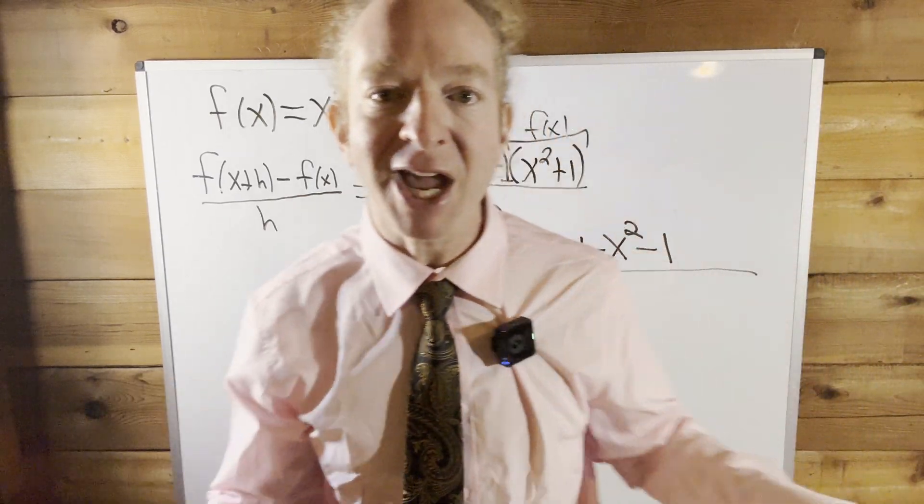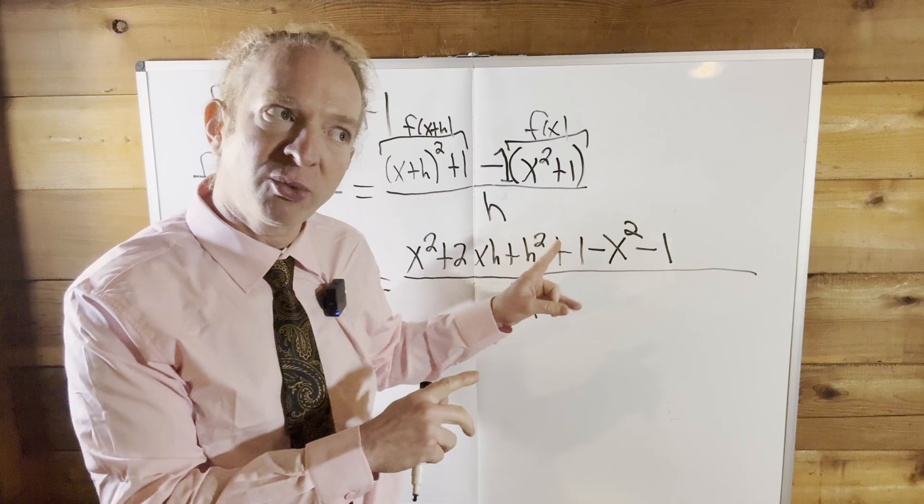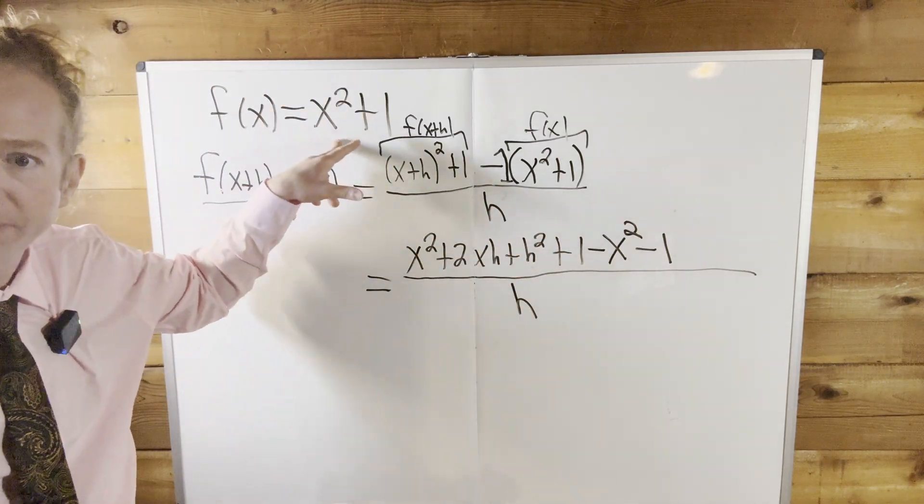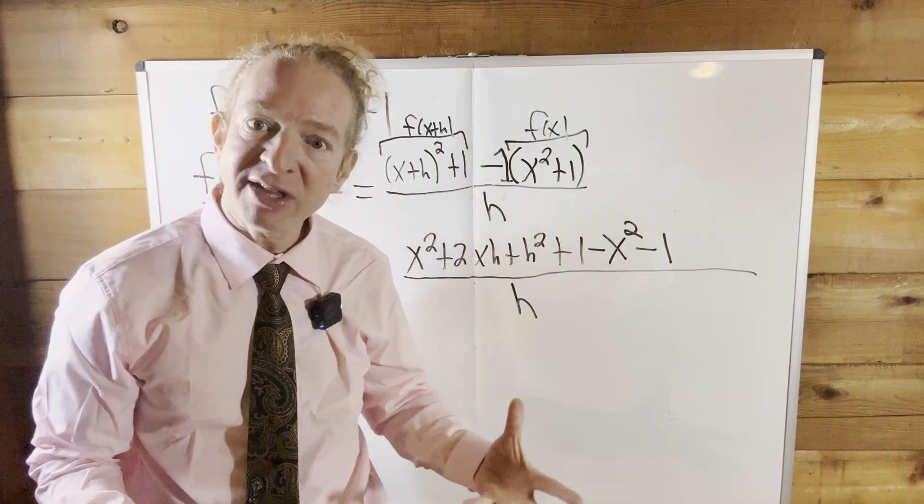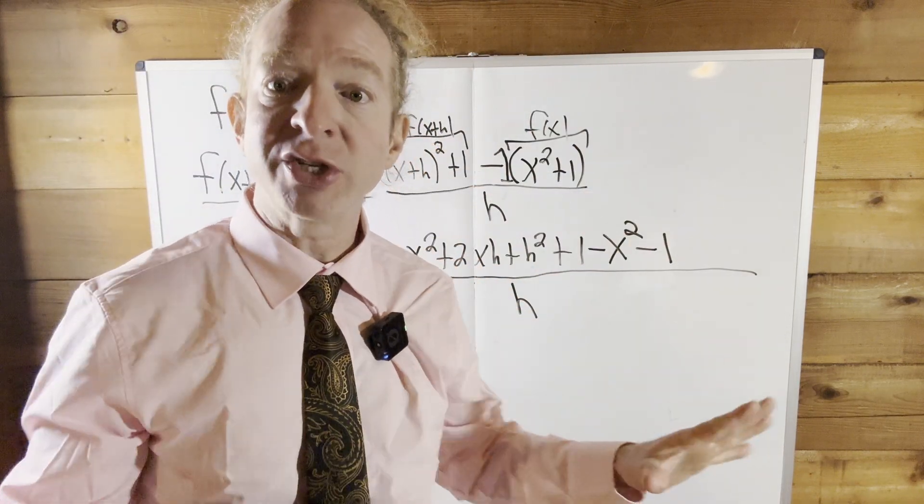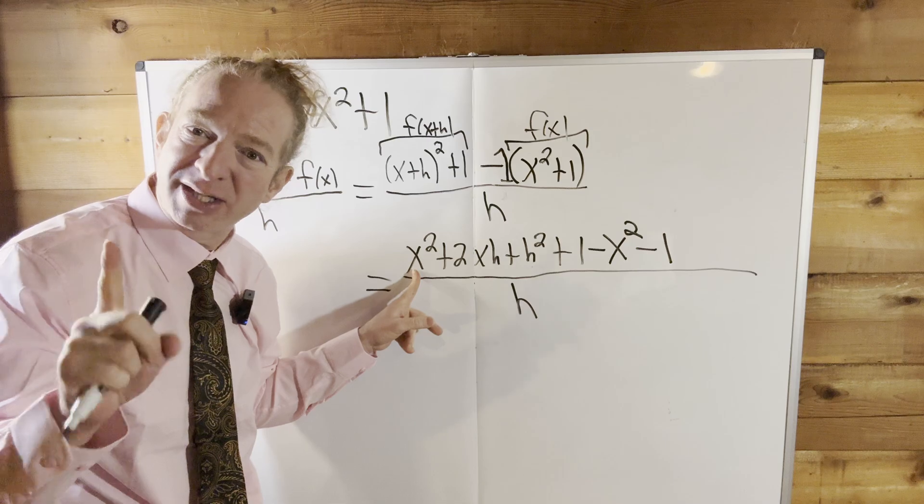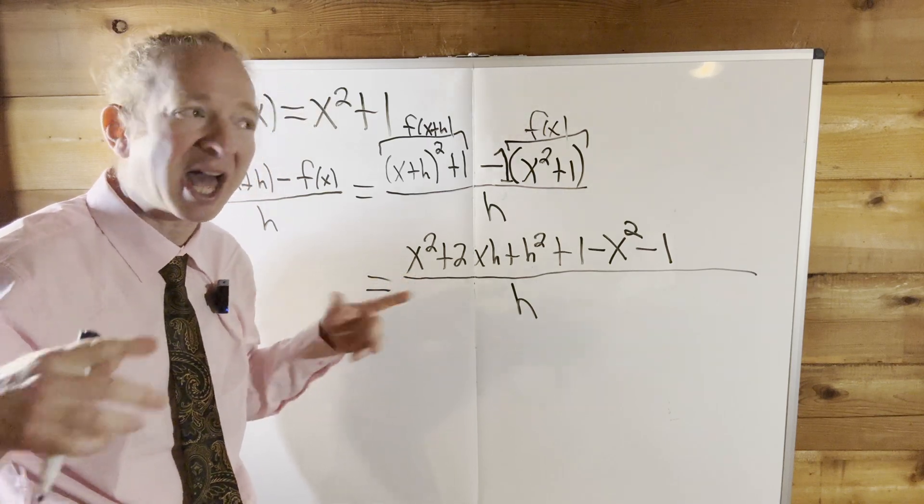All right, now at this point, there's some magic that happens. In these types of problems, and this will always happen with polynomials like this one, is that everything that doesn't have an h is going to magically cancel. It's going to go away, okay? Super important. So this x squared, it doesn't have an h. It should cancel.